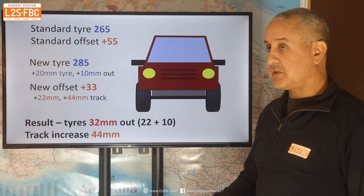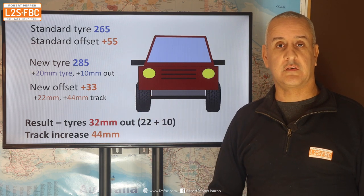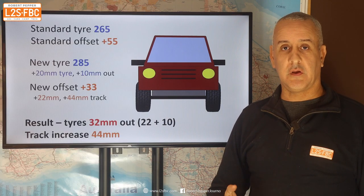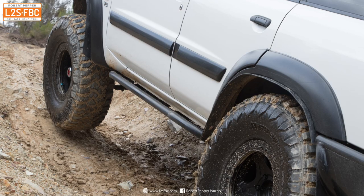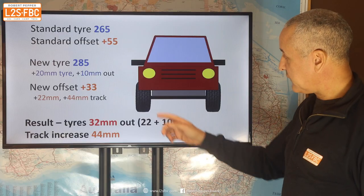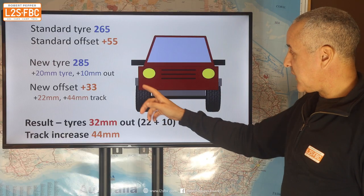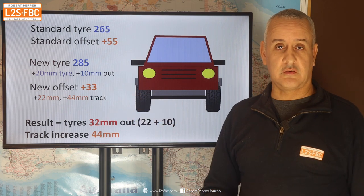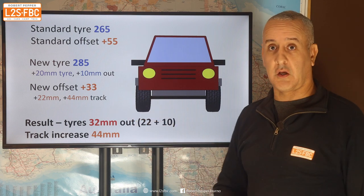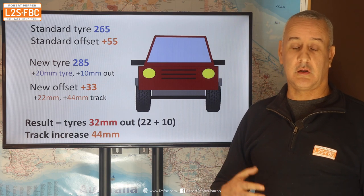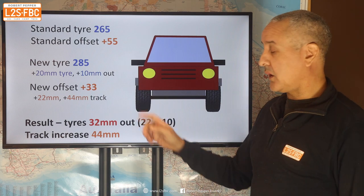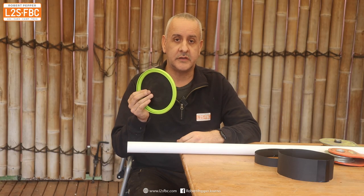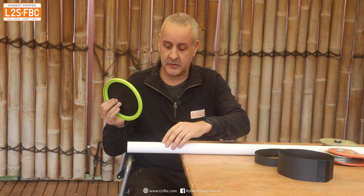Now because the tyres are sticking out, we need to fix that. Unlike this Hilux driver who hasn't done that, we need to fit some flares like this Patrol driver has done. So we fit some flares to the car, and that means the widest part of the car is now the bodywork — and the flares count as bodywork — as opposed to the tyre. It's not legal to drive a car, at least in Australia, where the tyres are the widest part of the vehicle.